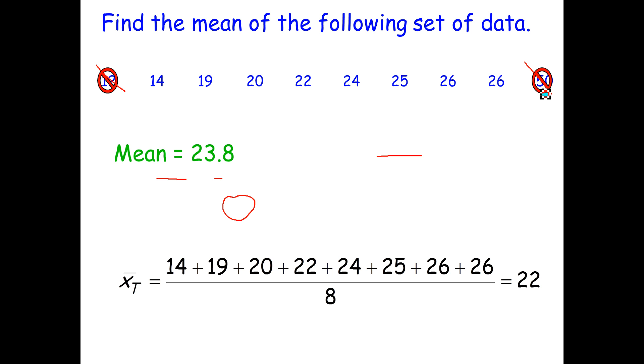And notice how when we knocked out that very big value, which used to be 50, our mean went down significantly. It went down from 23.8 to 22. Now I know we got rid of a 12, but that's not too far away from 14, so it doesn't really affect the data that much. But trimming the mean will most definitely change what your mean value is.